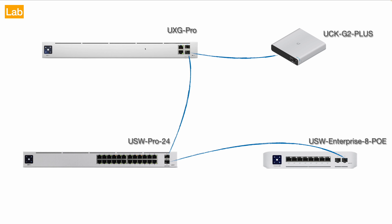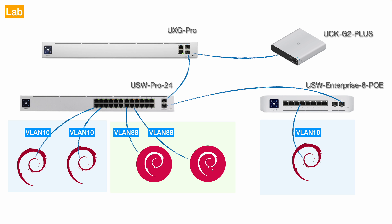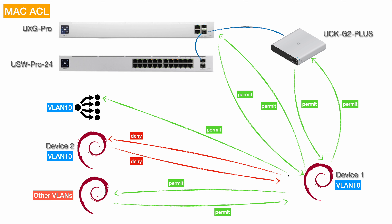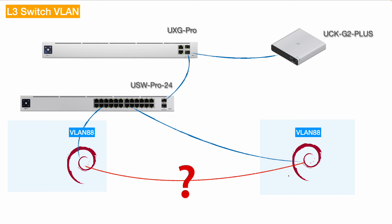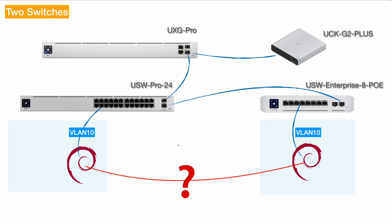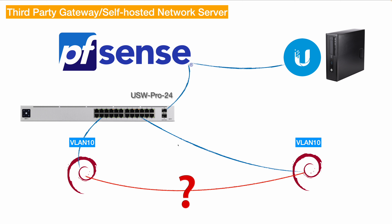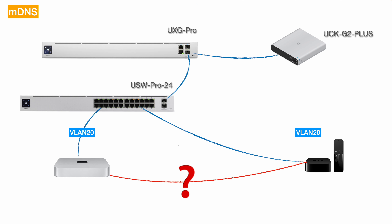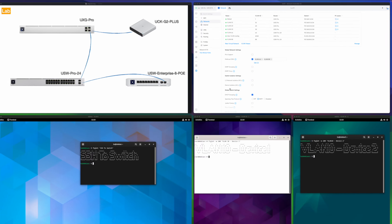This is my simple lab environment. I have a UXG-Pro as the router and a Cloud Key Plus running the network controller. I have two Layer 3 unified switches. In this video, I'll run multiple devices belonging to different VLANs and discuss from a back-end perspective how MAC ACL works once you configure device isolation. We'll check whether device isolation works on a Layer 3 switch VLAN, across multiple switches, with pfSense, with a self-hosted controller, and whether mDNS still works.